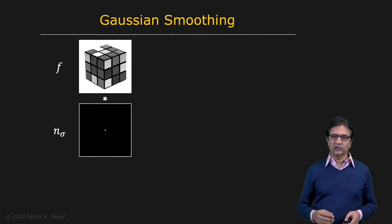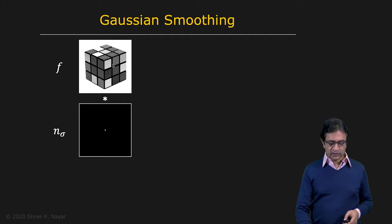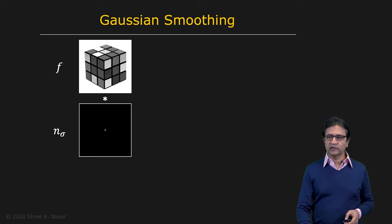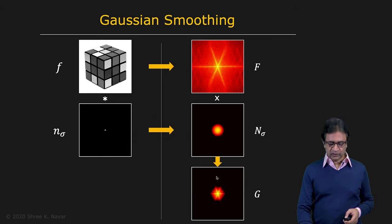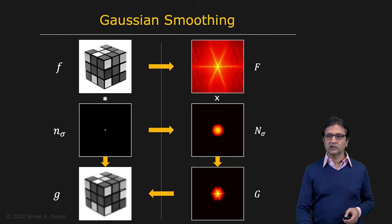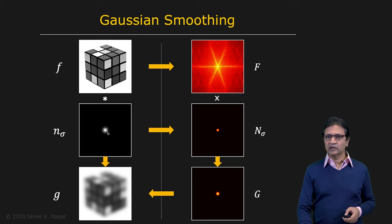We've also talked about Gaussian smoothing, so let's look at that in the frequency domain. Here's an image and you want to convolve it with a Gaussian kernel. As discussed, we don't have to do this in the spatial domain — you can find the Fourier transform of the image, find the Fourier transform of the Gaussian kernel, take the product of the two, and then take the inverse Fourier transform. The result is a slightly blurred version of the original image, because the Gaussian kernel in the spatial domain is a narrow kernel. If you make it a wider kernel, you get a blurrier image, and even wider gives an even blurrier result.